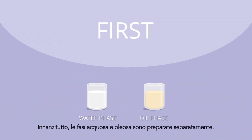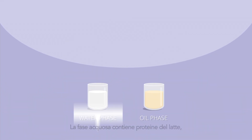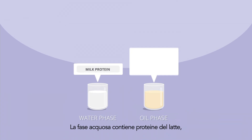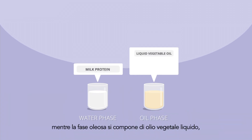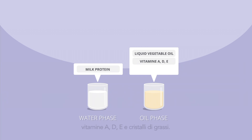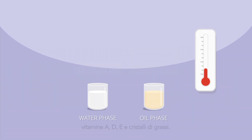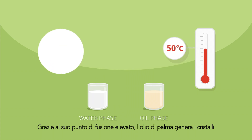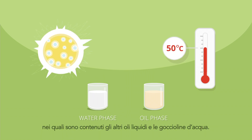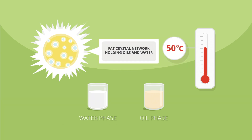First, the water and oil phase are prepared separately. The water phase contains milk protein and the fat phase consists of liquid vegetable oil, vitamin A, D and E, and fat crystals. Due to its high melting point, palm oil provides the crystals in which the other liquid oils and water droplets are held.